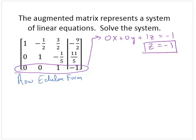So now that I have the value of z, I can go back and solve for the remaining variables. Looking at the second line, the second row.